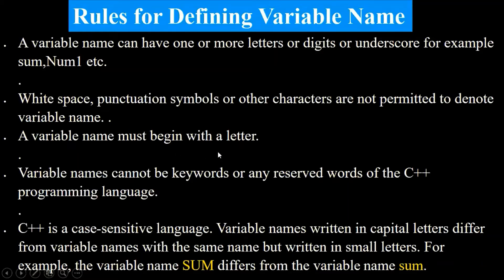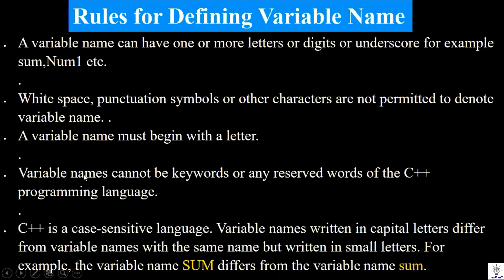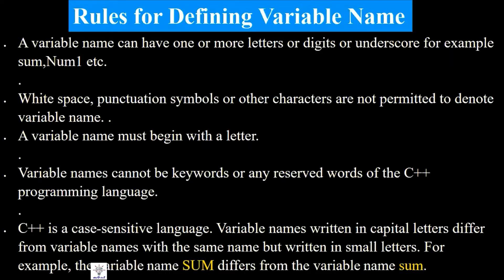A variable name must begin with a letter — it is necessary that the variable name starts with a letter; after that we can use digits. A variable name cannot be a keyword or any reserved word of C++ or C programming language. Reserved words are special words that have specific meaning in C language; they are used in header files, so we cannot use them as variable names.